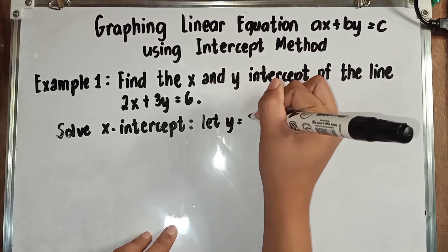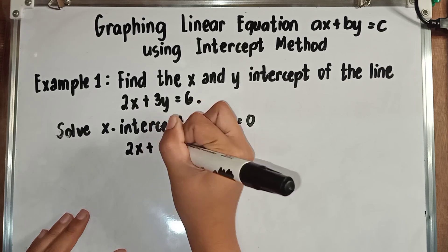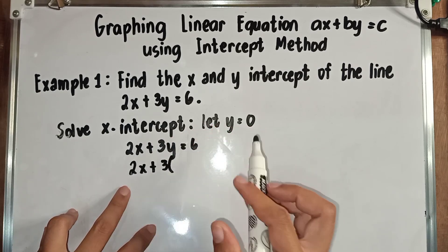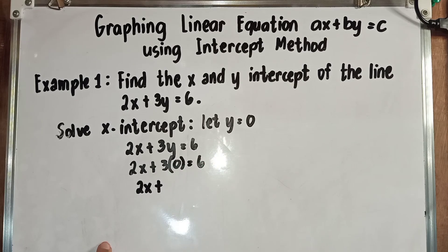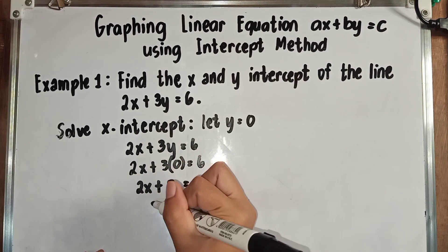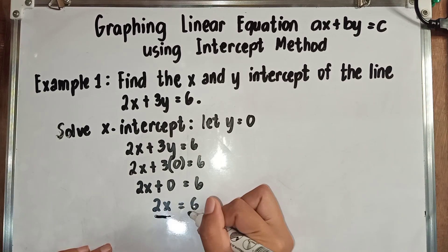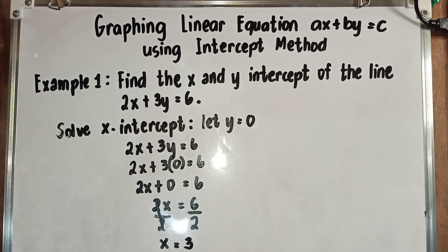So let Y is equal to 0 — we will replace Y with 0. We have here 2X plus 3Y is equal to 6. Copy 2X plus 3, and we let Y is equal to 0, so we place 0. Next: 2X plus 3 times 0, we have 0, is equal to 6. Bring down 2X is equal to 6. In order for X to be alone, we divide both sides by 2. Our X is 6 divided by 2, which gives us 3.